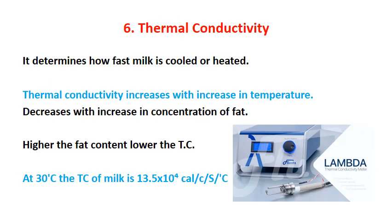The next property is thermal conductivity — how milk transmits heat — which determines how fast milk is cooled or heated. Thermal conductivity increases with increase in temperature and decreases with increase in fat content. Higher fat content results in lower thermal conductivity. This has a connection with specific heat. At 30 degrees Celsius, the thermal conductivity of milk is 13.5 × 10⁻⁴ calories per centimeter per second.